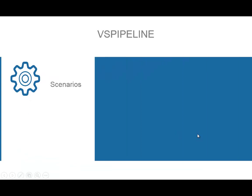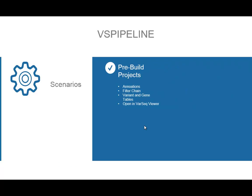VS Pipeline, in its simplest form, is about running that step of taking a template and building a project, and being able to automate the input of data into that project and the export of data from that project. The ability to create these projects automatically as part of your existing automated pipeline has been a strong motivator for building VS Pipeline.